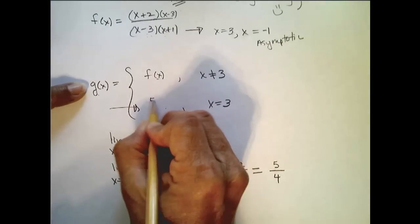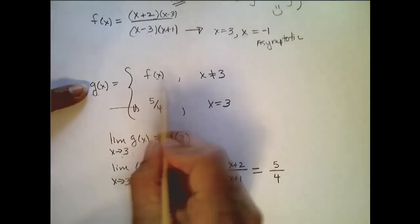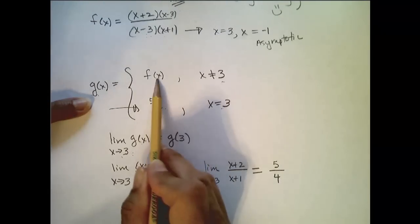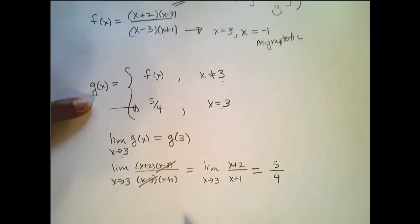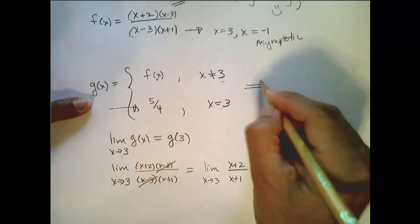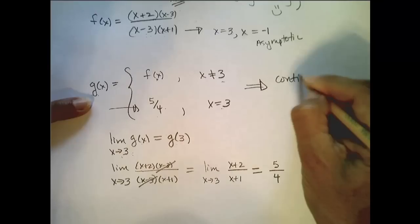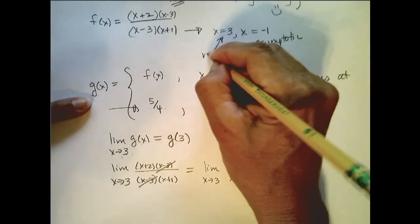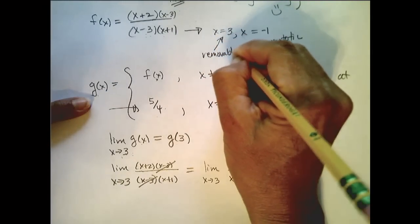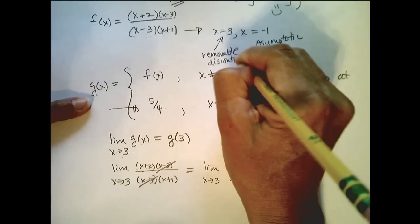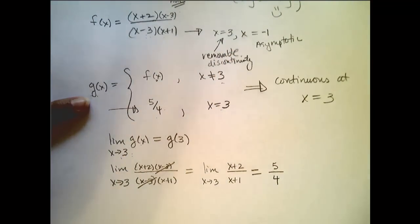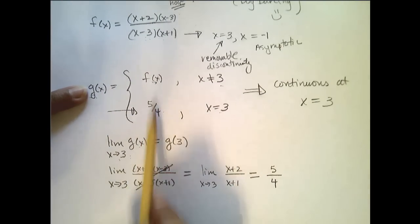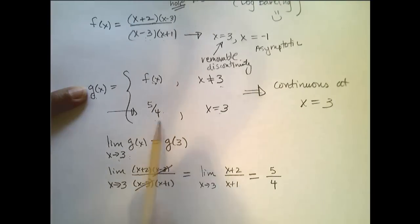So if I define this g to be f everywhere but at 3 and 5 fourths at 3, which is the limit of f as x goes to 3, then what I've created is this function that is continuous at x equals 3. That is, this was a removable discontinuity. I can't do anything about the discontinuity at negative 1, but I can create this new function, which is f everywhere away from 3 and is also continuous at 3.